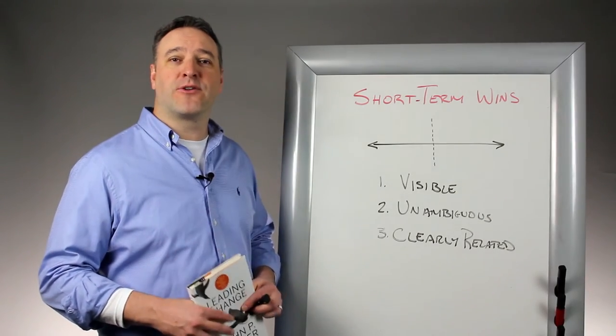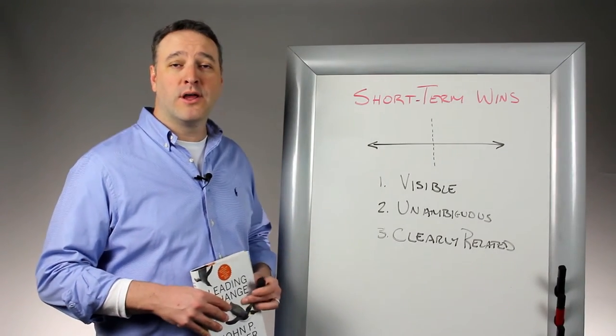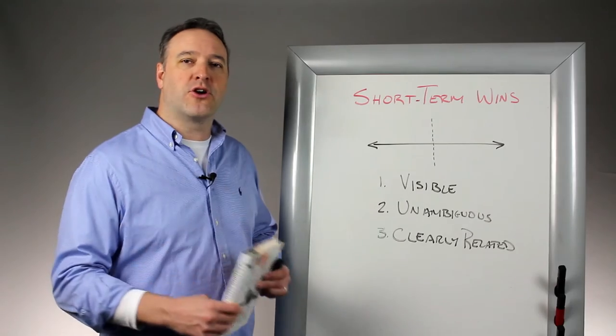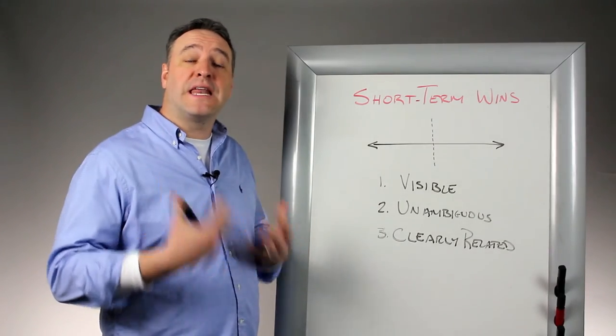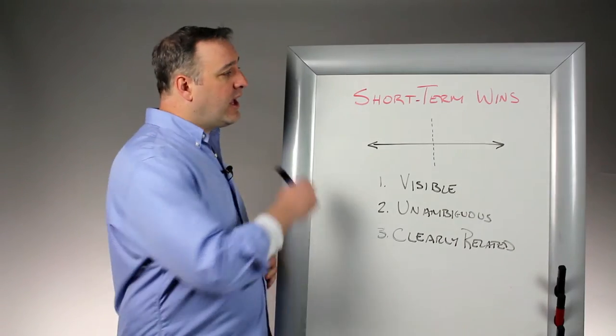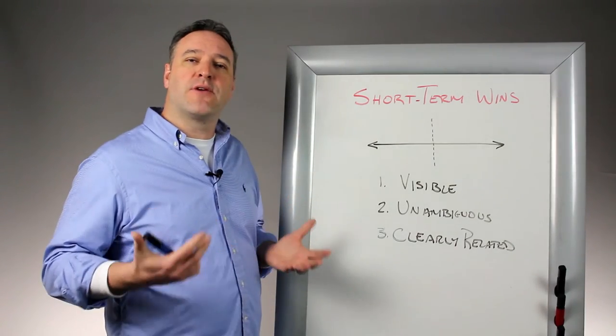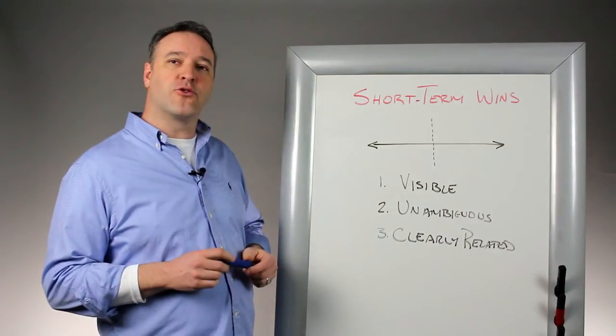Hi, this is Jamie Mallon of Human Tech back with another installment of HT Whiteboard. As you recall, we're reviewing this book called Leading Change, and in that book we're talking about how to lead a transformation process. Step six is how to generate short-term wins and the importance of those short-term wins.